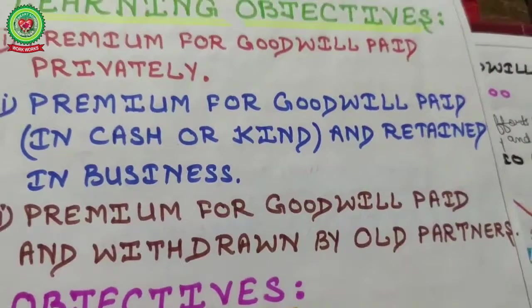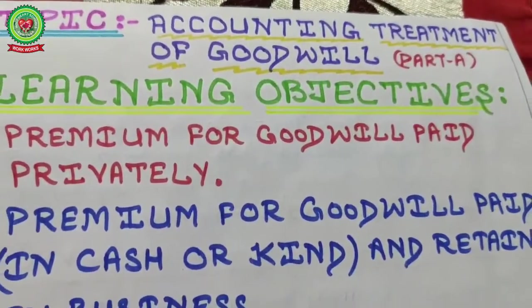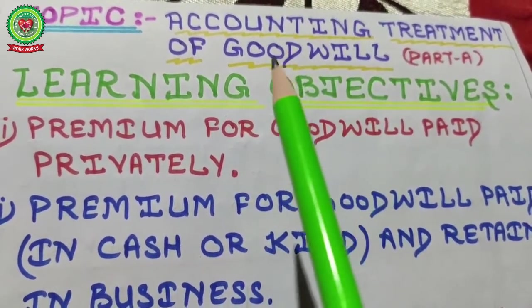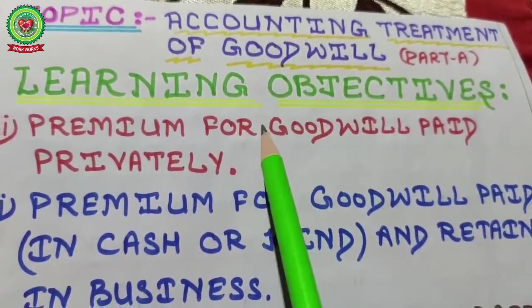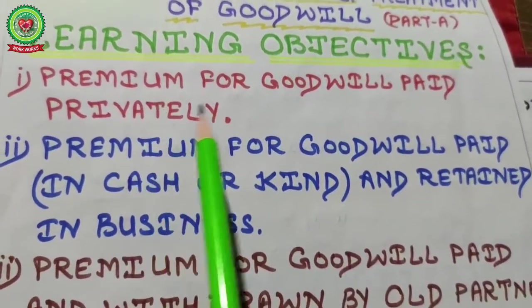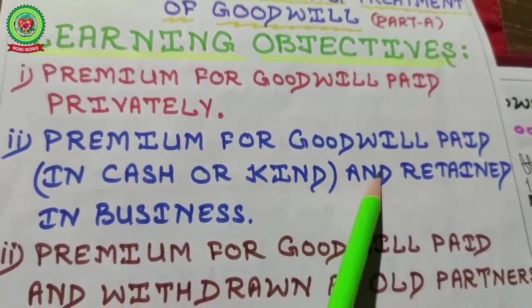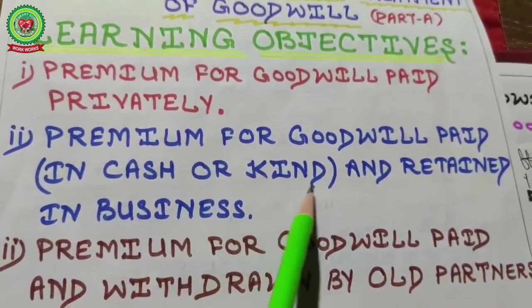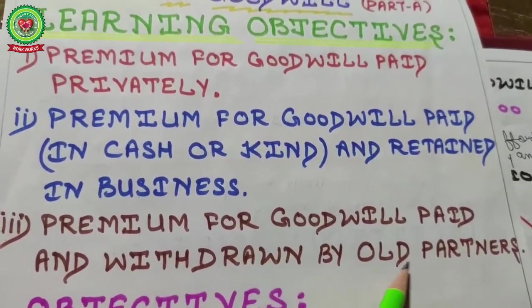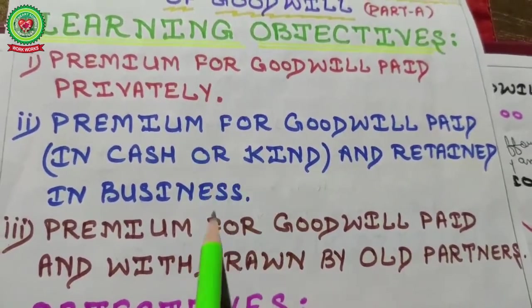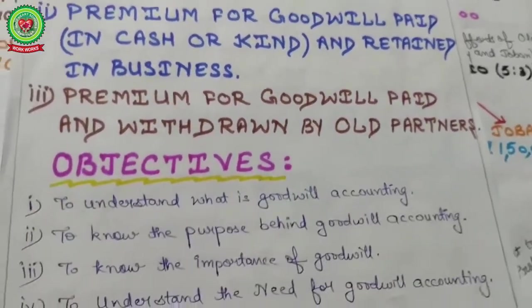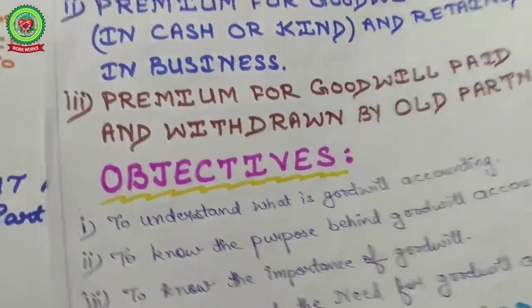Today's topic is accounting treatment of goodwill, which is a lengthy topic so I've divided it into two lectures. Today is Part A. The learning objectives are: (1) premium for goodwill paid privately, (2) premium for goodwill paid in cash or kind and retained in the business, and (3) premium for goodwill paid and withdrawn by old partners.